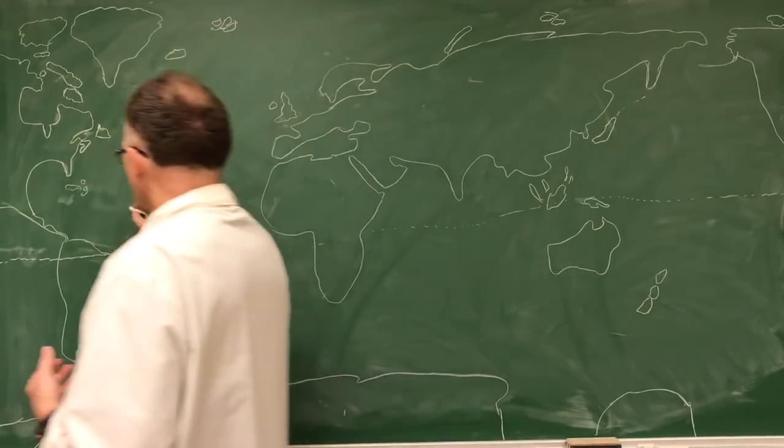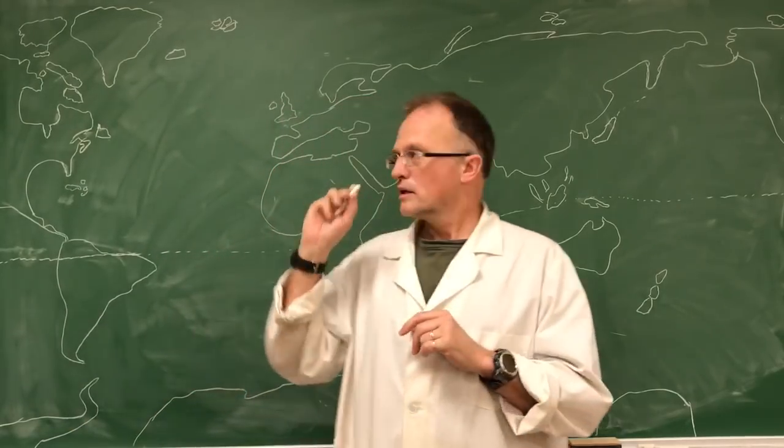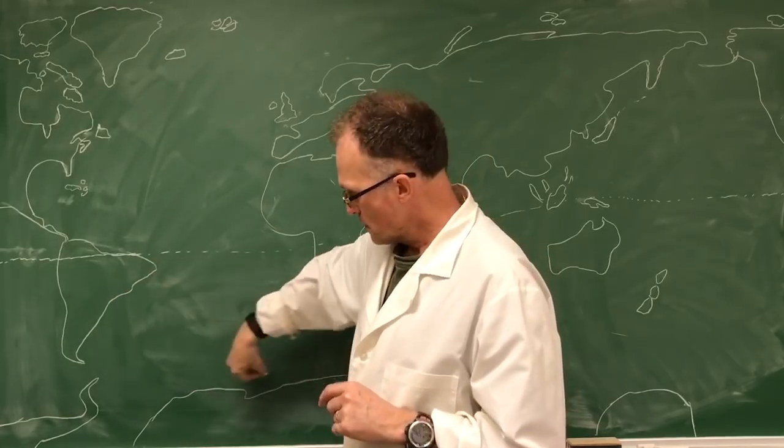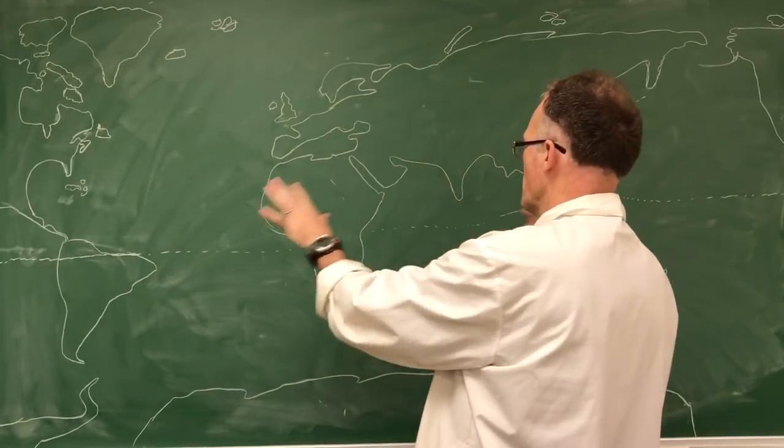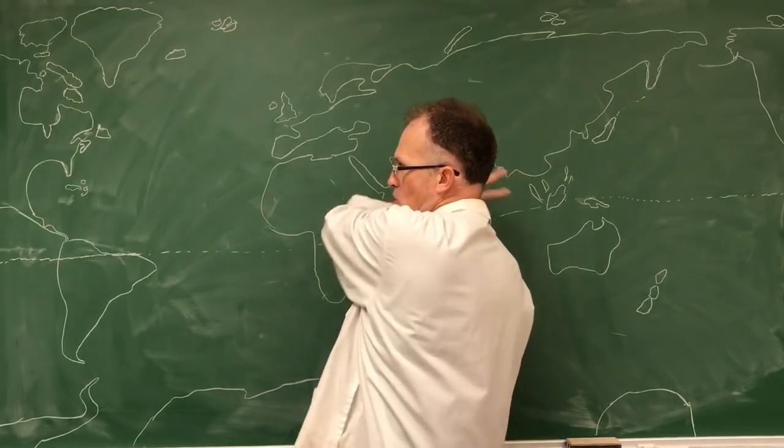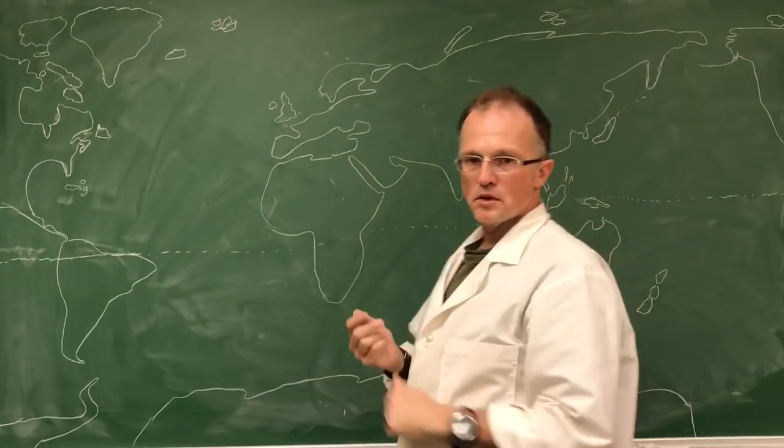First of all, things get deflected to the right in the northern hemisphere, to the left in the southern hemisphere by the Coriolis force because the earth is rotating this way. Sun rises in the east, sets in the west. Earth has to be rotating this way if you wrap this into a sphere.